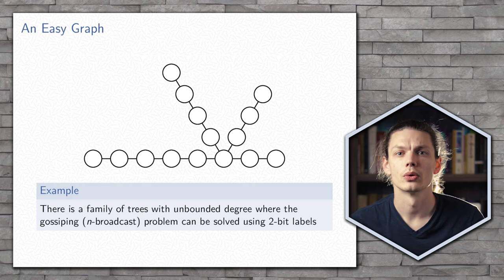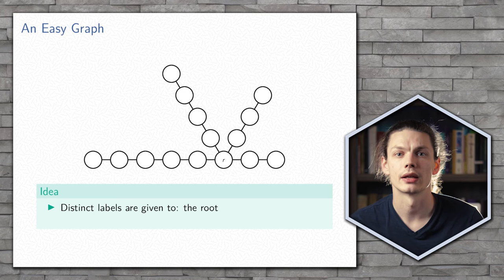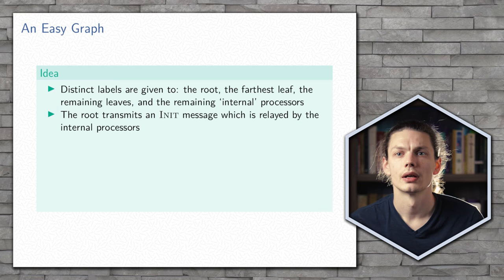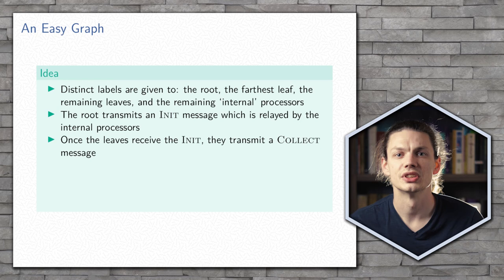To label this graph, we assign a distinct label to the root and to the farthest leaf. The remaining leaves are given another label, and all of the remaining processors are given the last label. The algorithm we use transmits an init message from the root, which is relayed by the internal nodes towards the leaves.